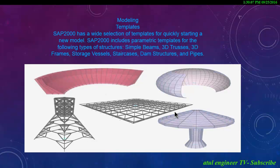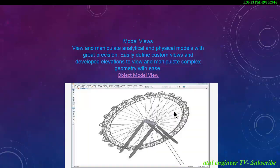SAP 2000 has a wide selection of templates for quickly starting a new model, including parametric templates for the following types of structures: simple beams, 3D trusses, 3D frames, storage vessels, staircases, dam structures and pipes.